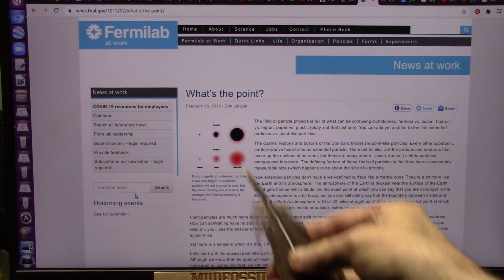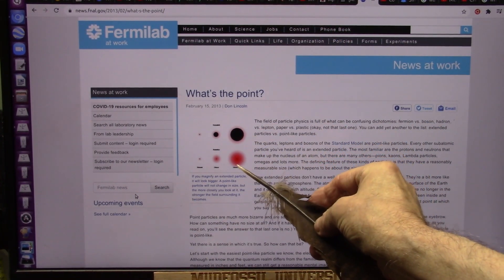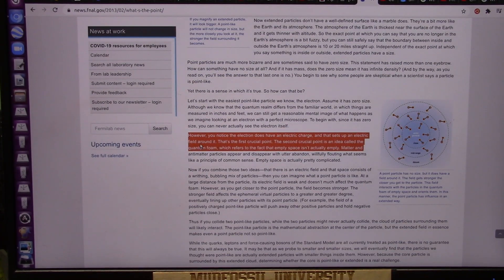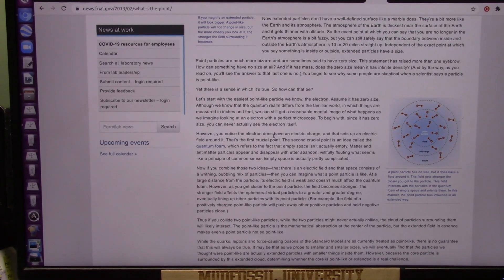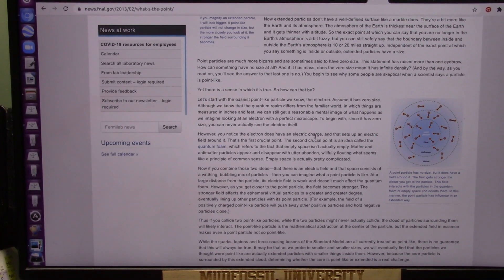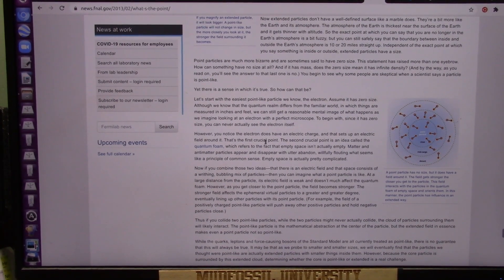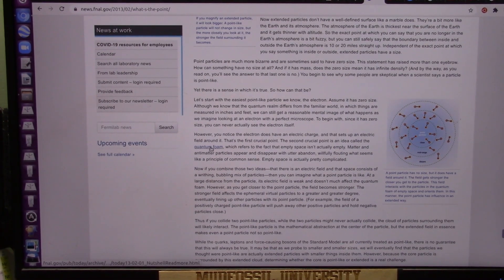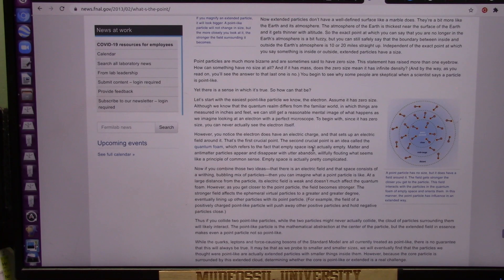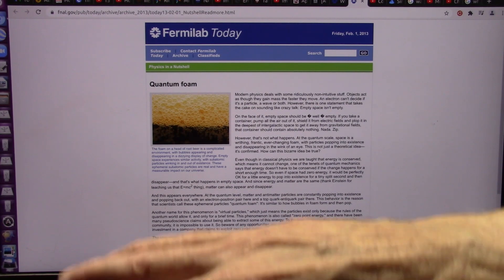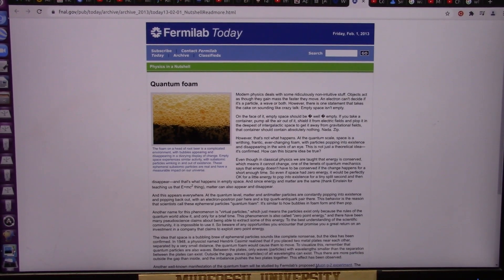This is why I'm upset. Fermi Lab has seen these particles, the fixed particle and the point particle. We have seen them too. Only we can actually direct them into creating energy. However, you notice the electron does have an electric charge. That's the electron neutrino. It has a charge, a field, and that's an electric field around it. I agree. That's the first crucial point. The second crucial point is an idea called the quantum foam, which refers to the fact that empty space isn't actually empty.